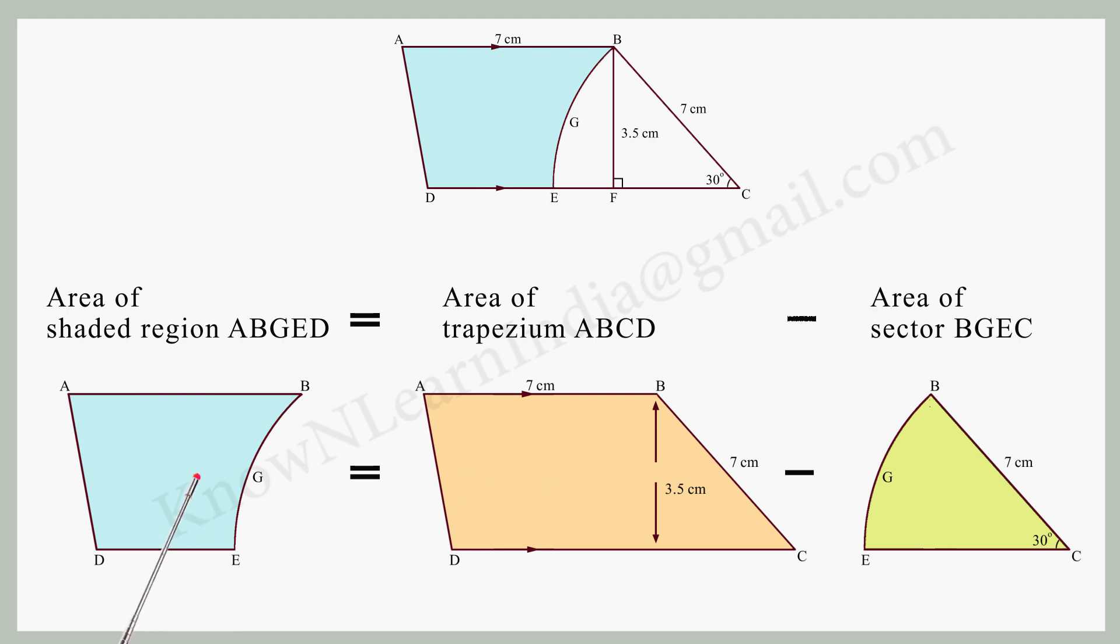That is, area of shaded region ABGED equals area of trapezium ABCD minus area of sector BGEC.